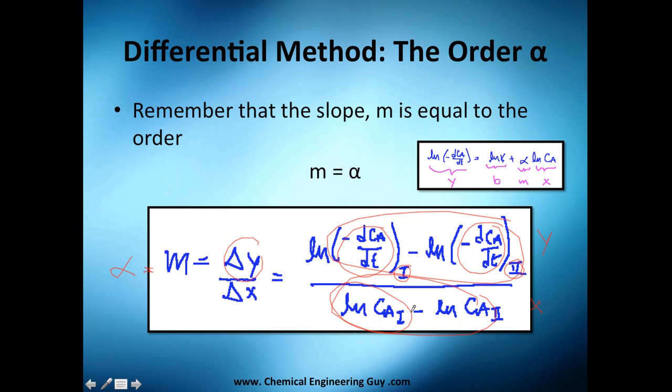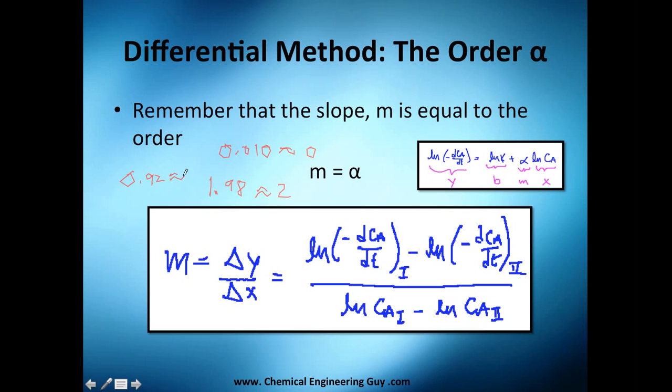That's how you calculate the order. Maybe you will get 1.98, which I will say is second order, or maybe you get 0.01, that's zero order, and even 0.92, I will say that's first order. It depends on how flexible you are. Maybe you know that your lab is not able to get exact concentrations, so that's why we need this to approximate. The best case scenario is you get 1.0001, that's obviously first order.